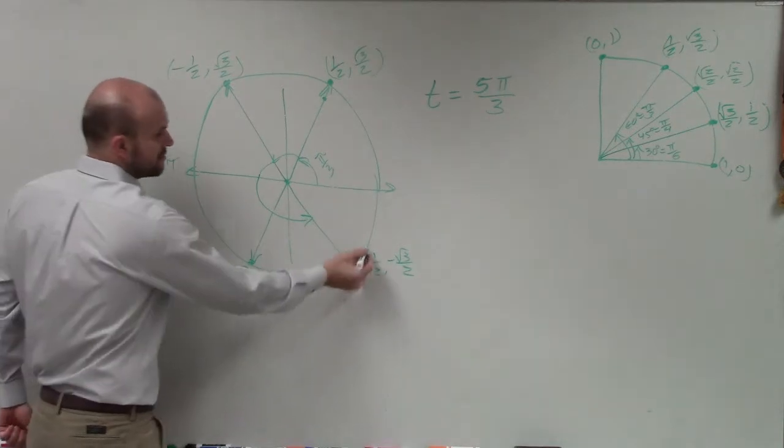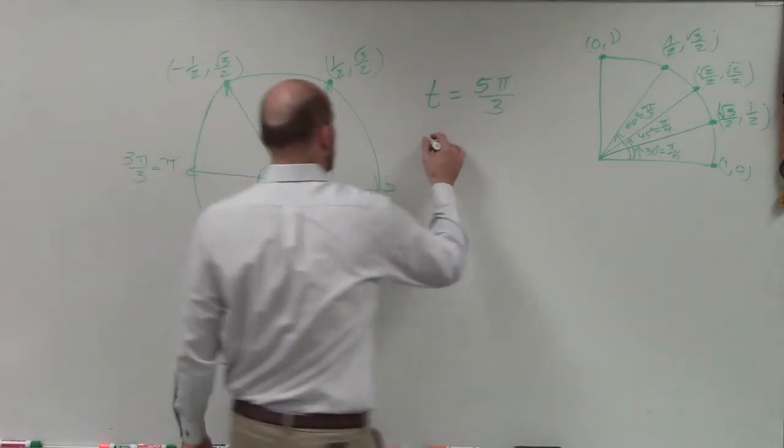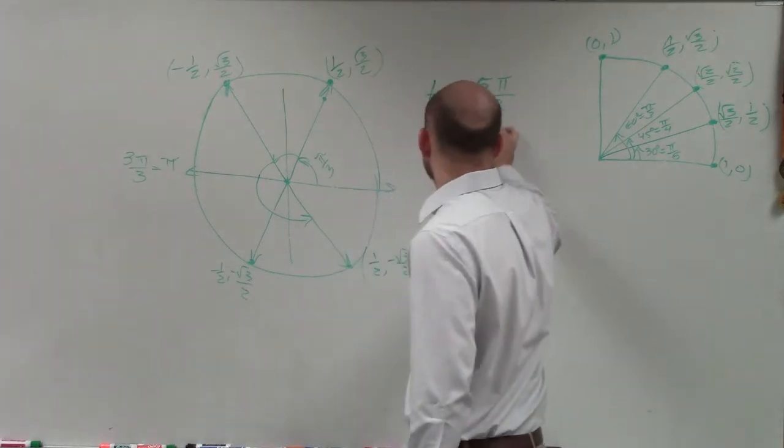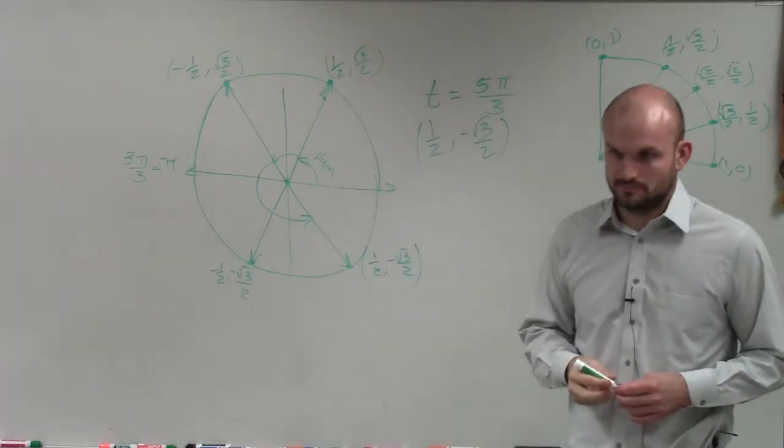Therefore, all they're asking is what is the coordinate point? 1 half negative square root of 3. So the point is 1 half negative square root of 3 over 2. Done.